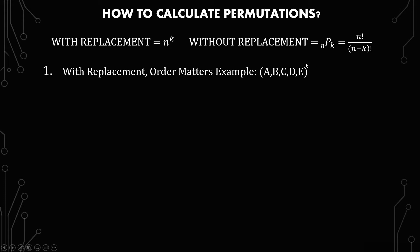The first example we're going to do is with replacement order matters using the set A, B, C, D, and E. Now if I wanted to choose any two of them it would be 5 because we have five of them to the 2 because we're choosing two which would equal 25 permutations.